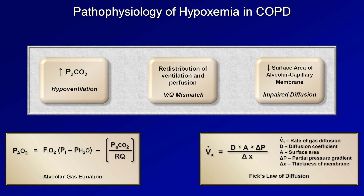For completeness, the fourth mechanism of hypoxemia — which COPD does not directly involve — is right-to-left shunting of blood, for example in congenital heart disease or a pulmonary AVM.